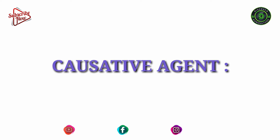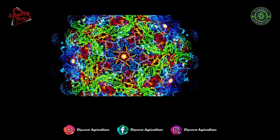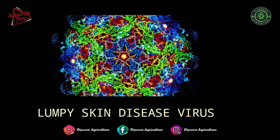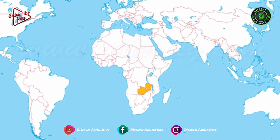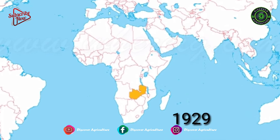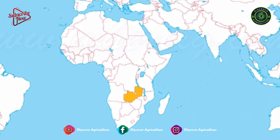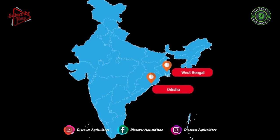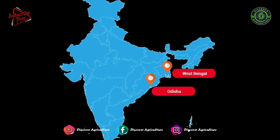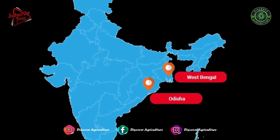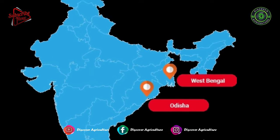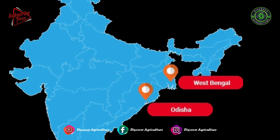Lumpy skin disease is caused by the lumpy skin disease virus. The first description of the clinical signs of LSD was in 1929 in Zambia. According to official records, India saw the first case of LSD in the year 2019 in eastern states, especially West Bengal and Odisha.